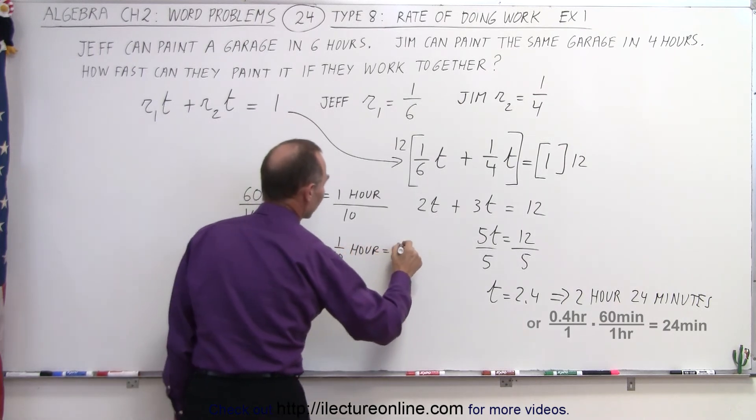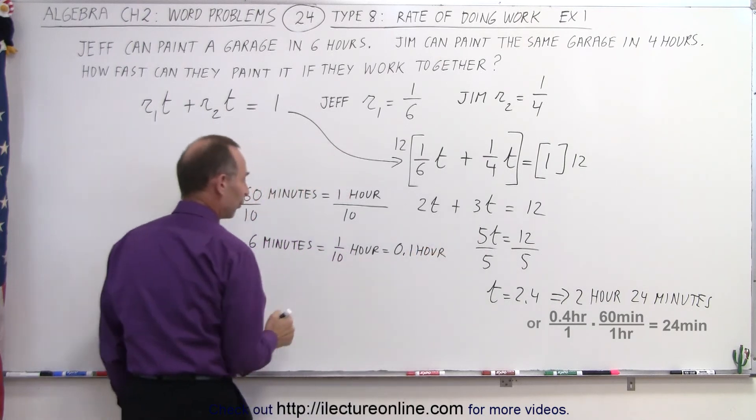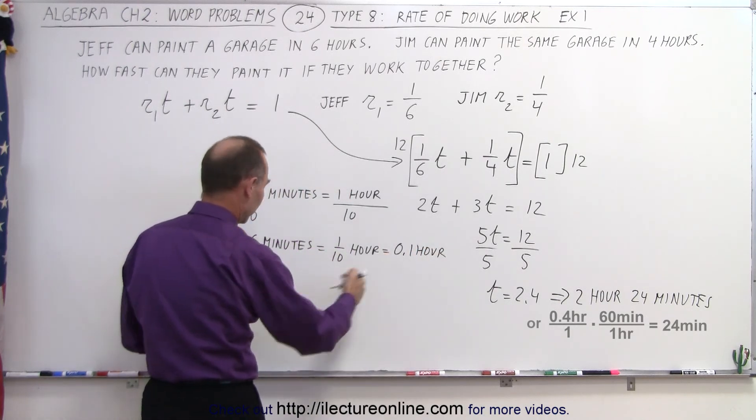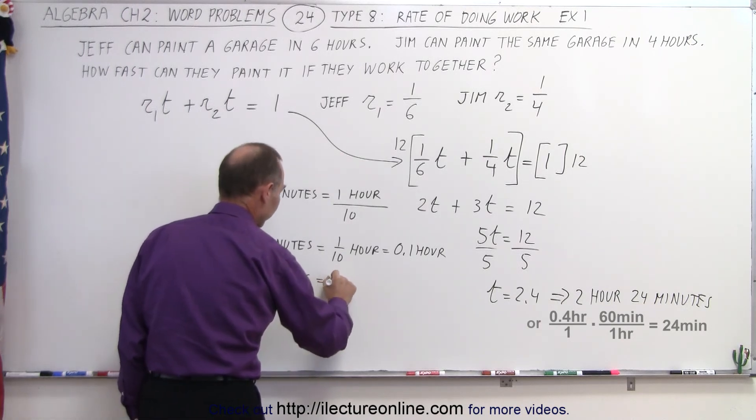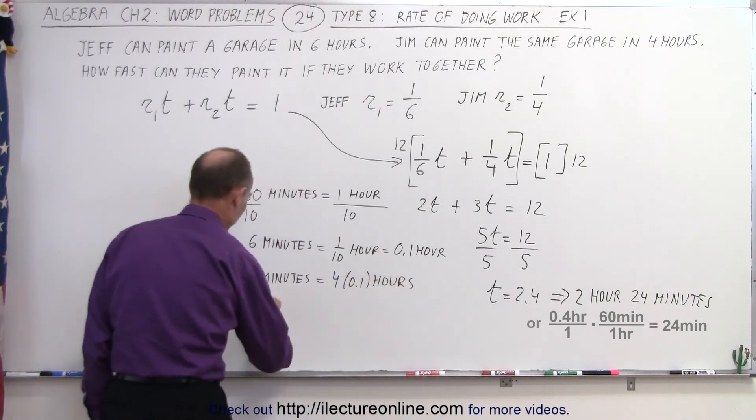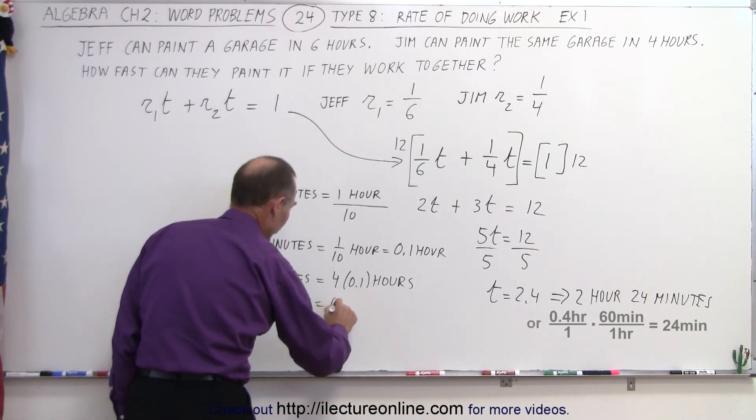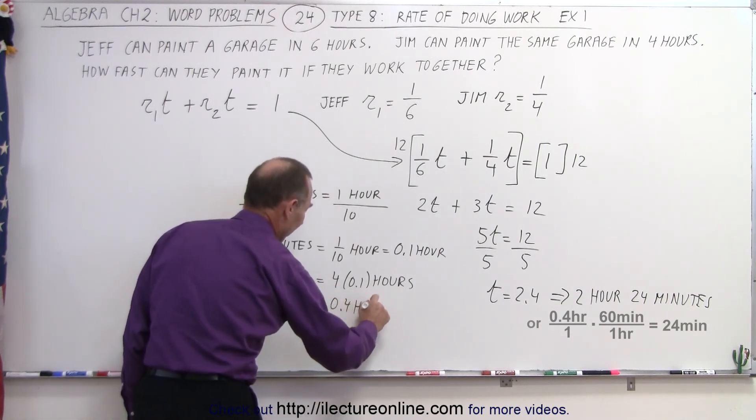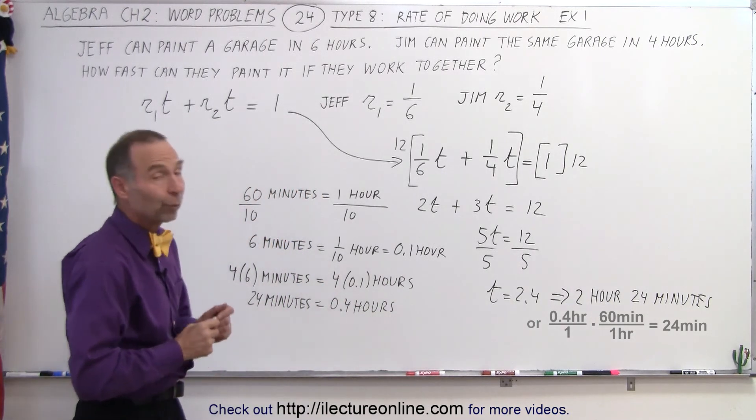which can also be written as 0.1 hour. And so therefore, if I now multiply everything by 4, so 4 times 6, that means 4 times 6 minutes is equal to 4 times 0.1 hours, or 24 minutes is equal to 0.4 hours. And that's how I converted from 0.4 hours to 24 minutes.